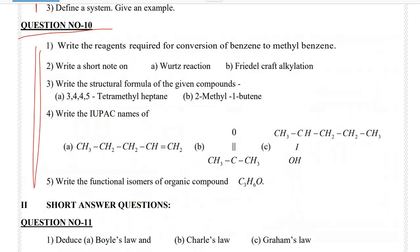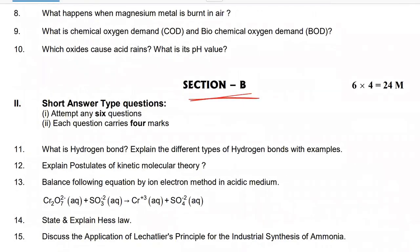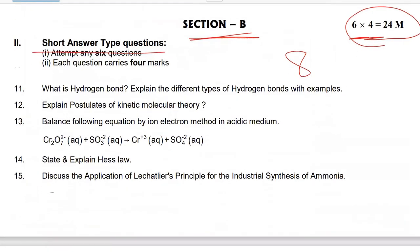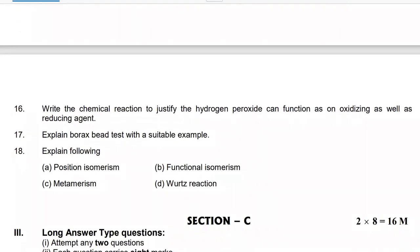Very short answers questions 11 to 20 are important. Next, section B — short answers questions. Total: 8 questions, any 6, 4 marks each, 24 marks. I'm going through 8 questions — check the model paper short answer questions. Important.